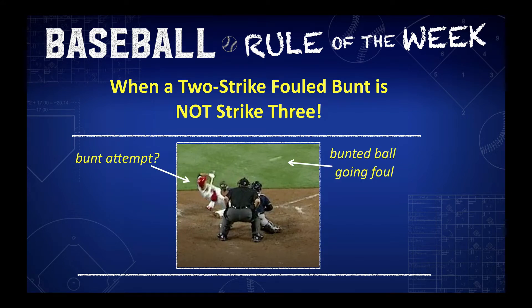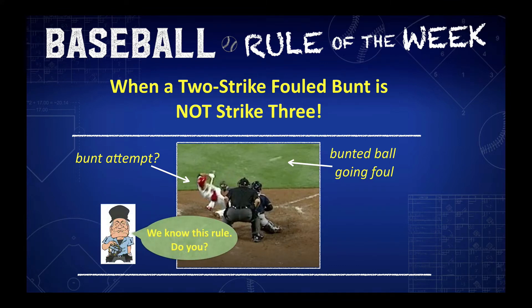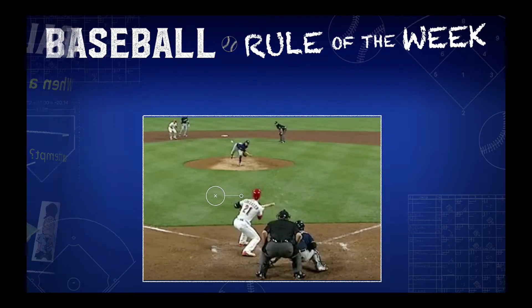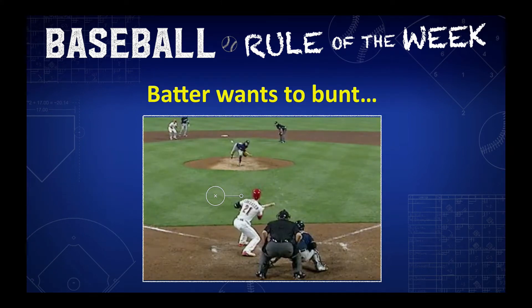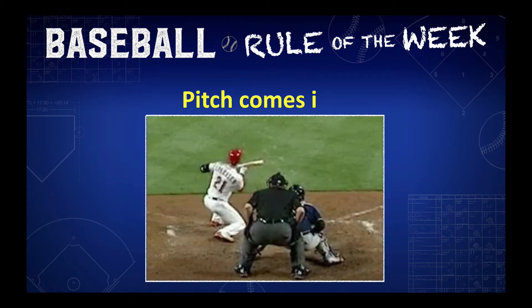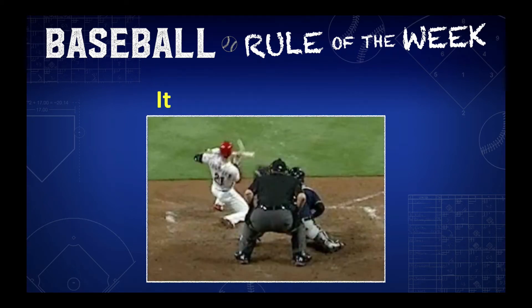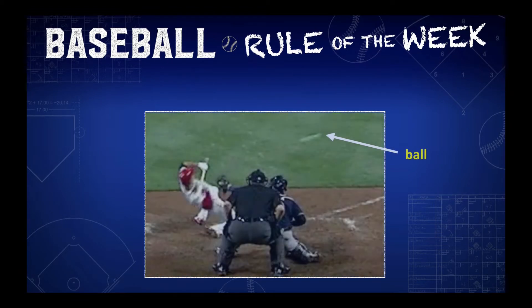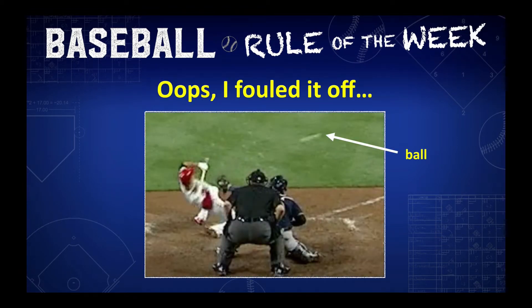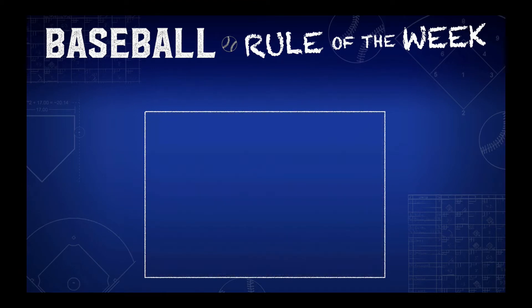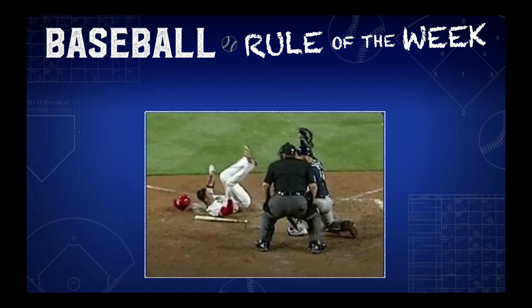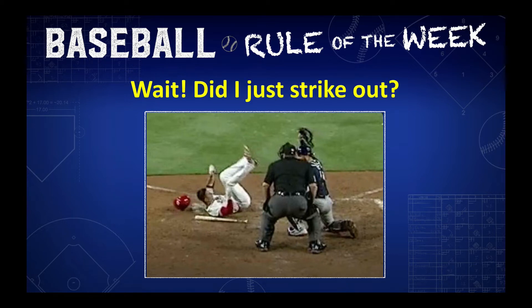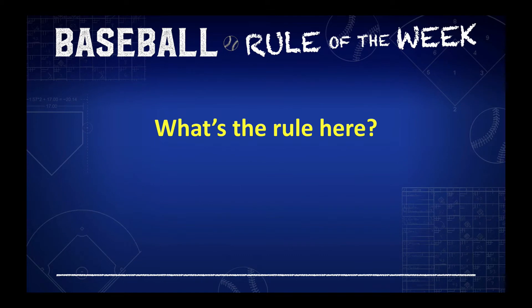There's the bunt attempt, and there's the ball going foul. The batter wants to bunt. The pitch comes in — it looks a little tight. He fouled that off! Did I just strike out? What's the rule here?